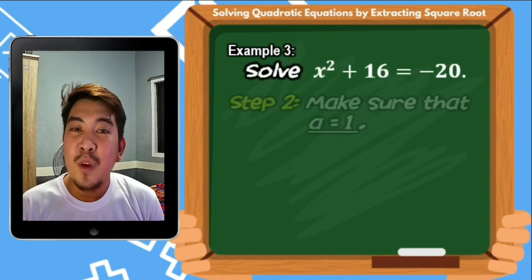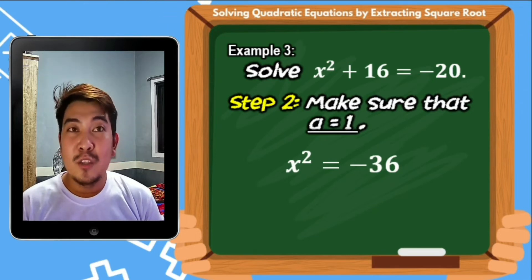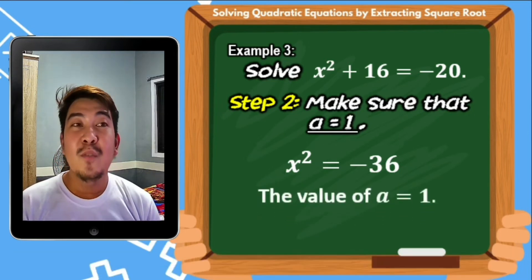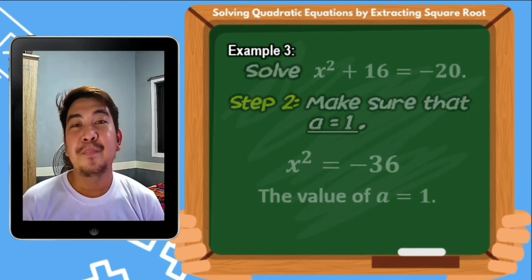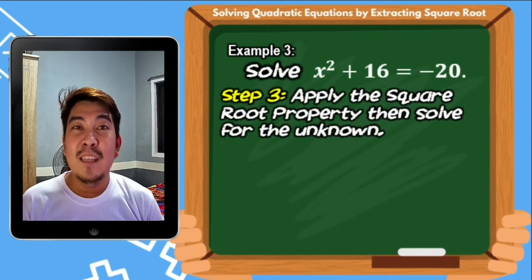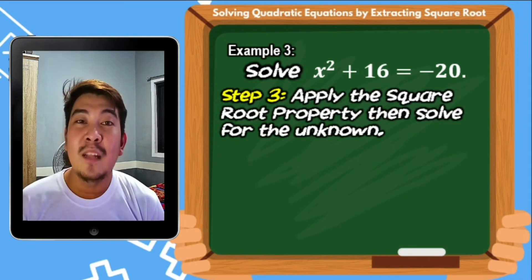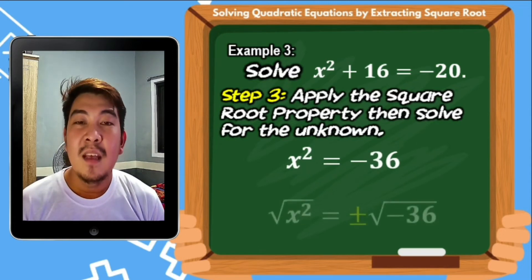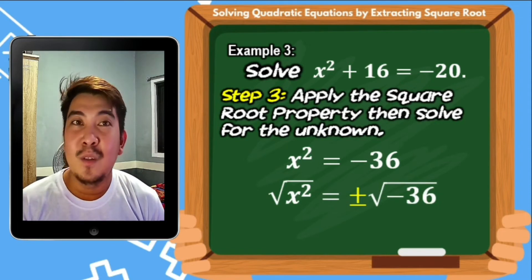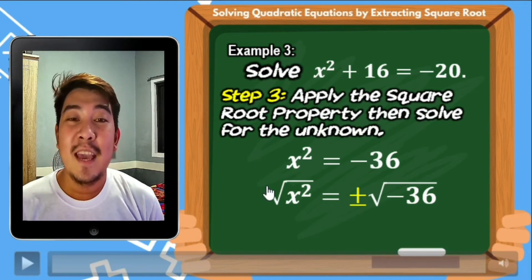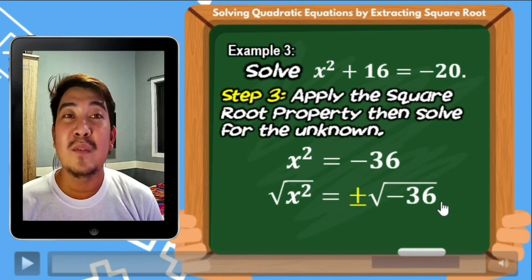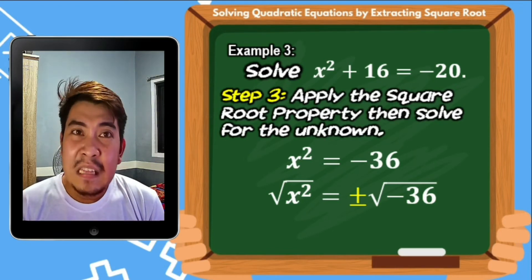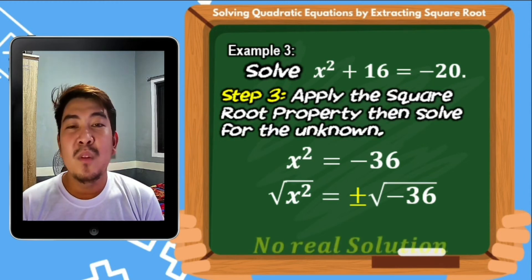Step number 2: the value of A in our equation is actually 1, so we go immediately to step number 3 — applying the square root property. From x squared equals negative 36, we extract square roots. The square root of x squared is x, which equals positive or negative square root of negative 36. Can you think of a number multiplied by itself that gives negative 36? There is none, so the answer will be no real solution.